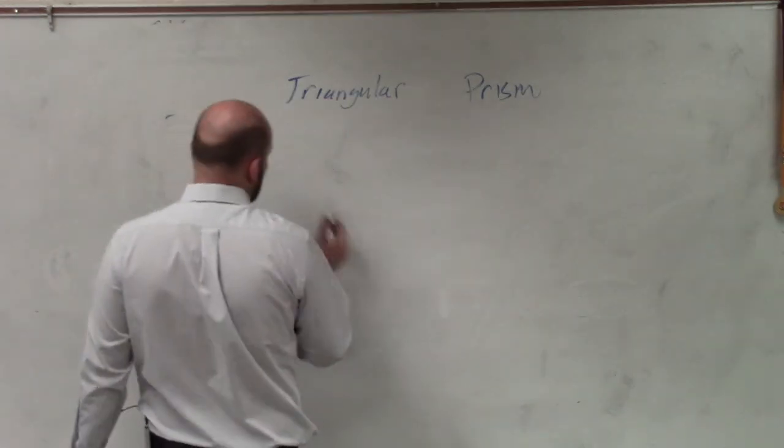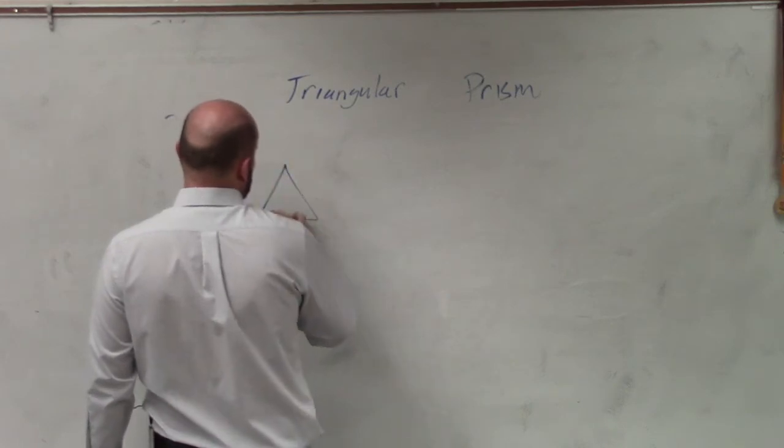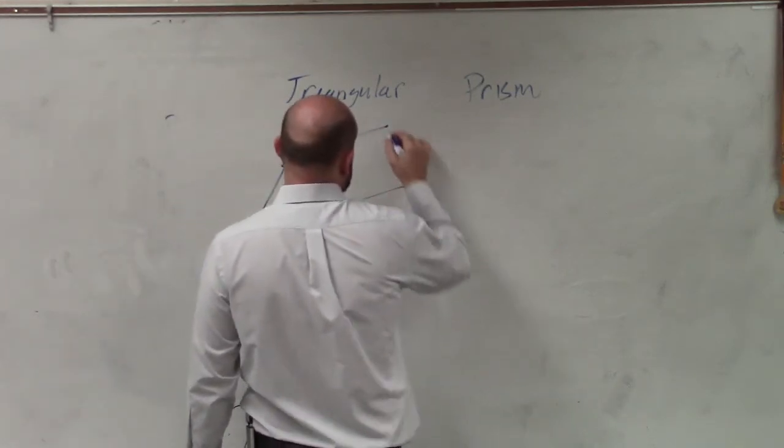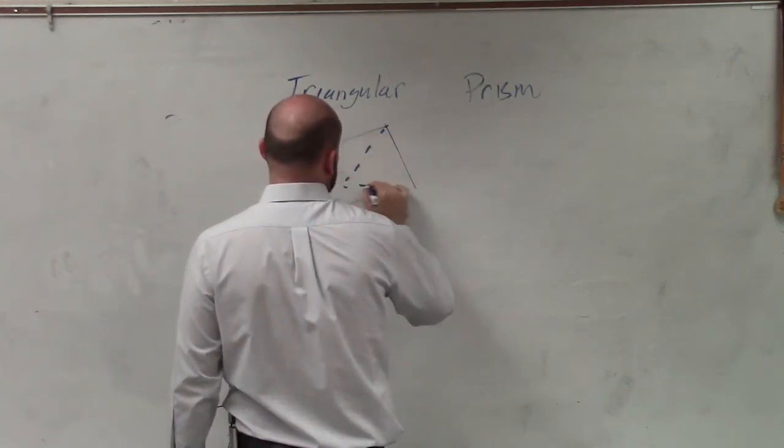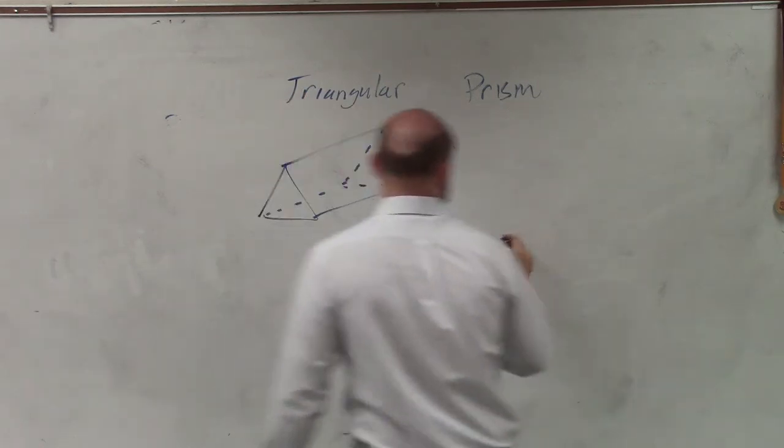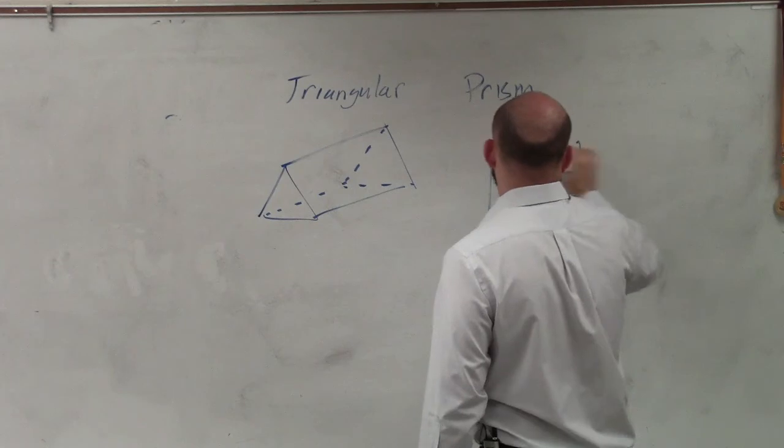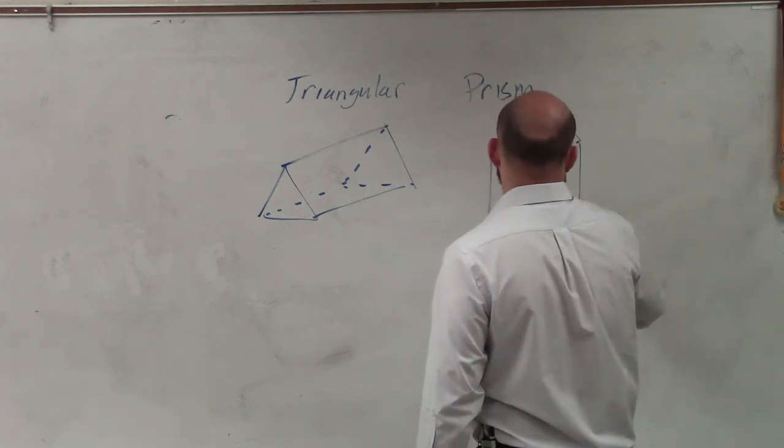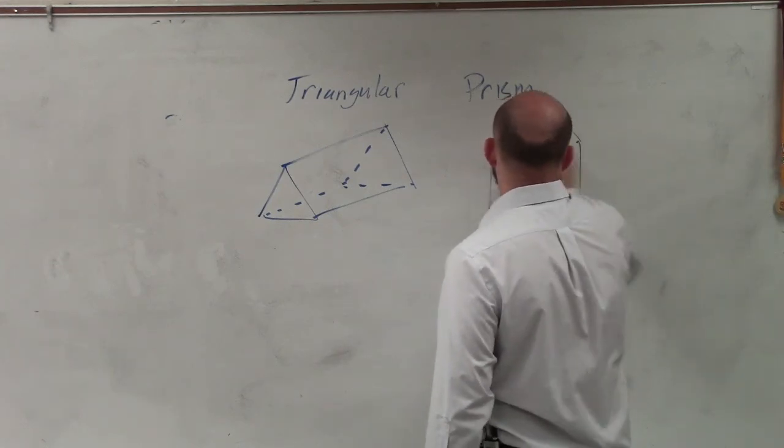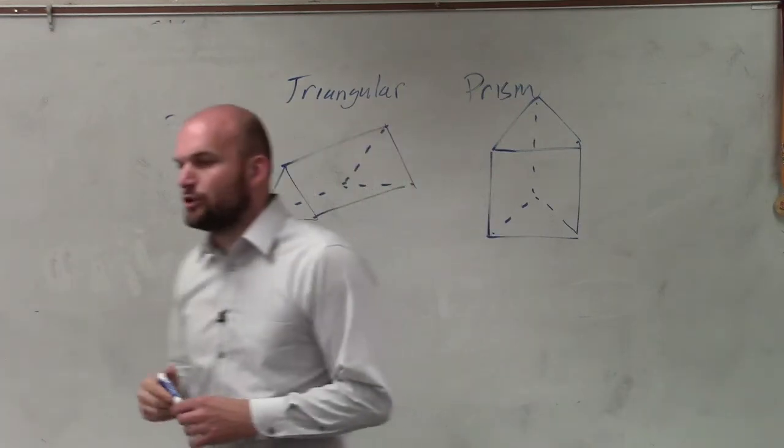So there's a couple ways we can look at this. This one is kind of deceiving, but it is a triangular prism. It's just a tent. Now, why is this a triangular prism?